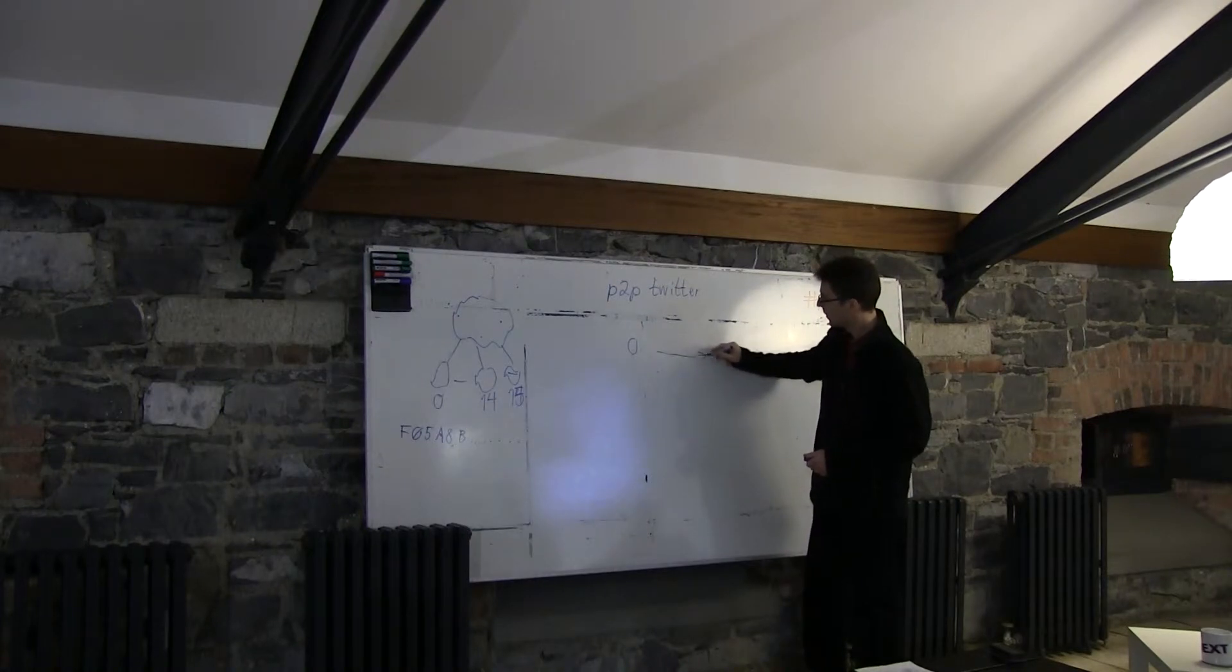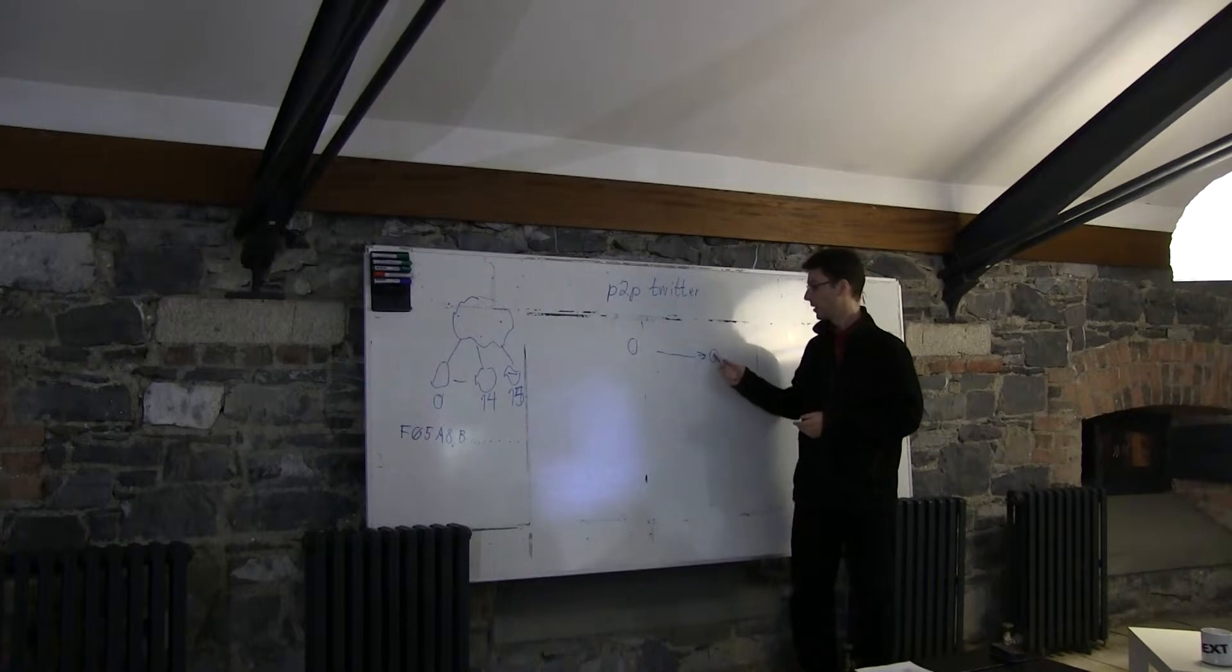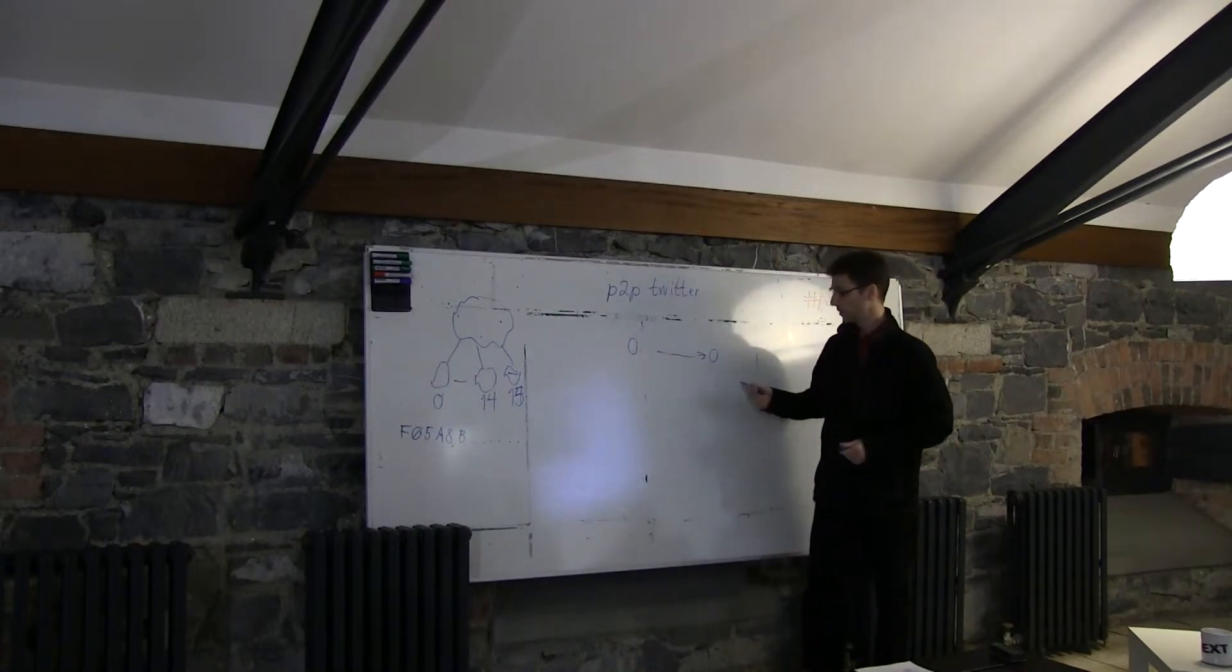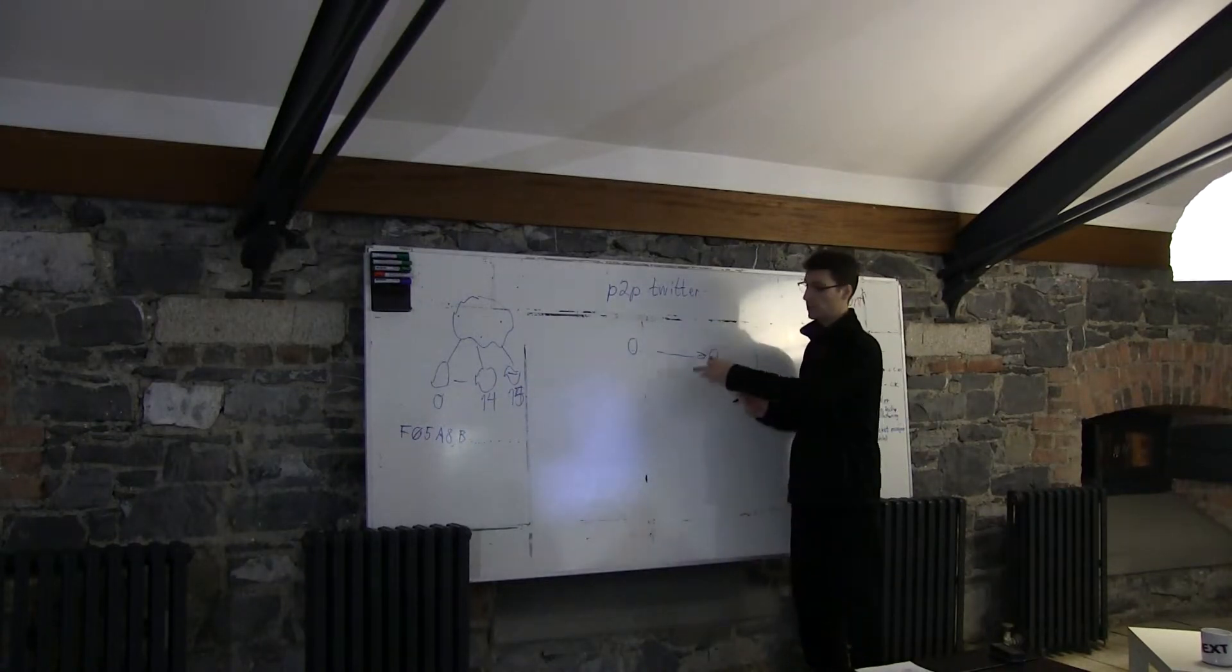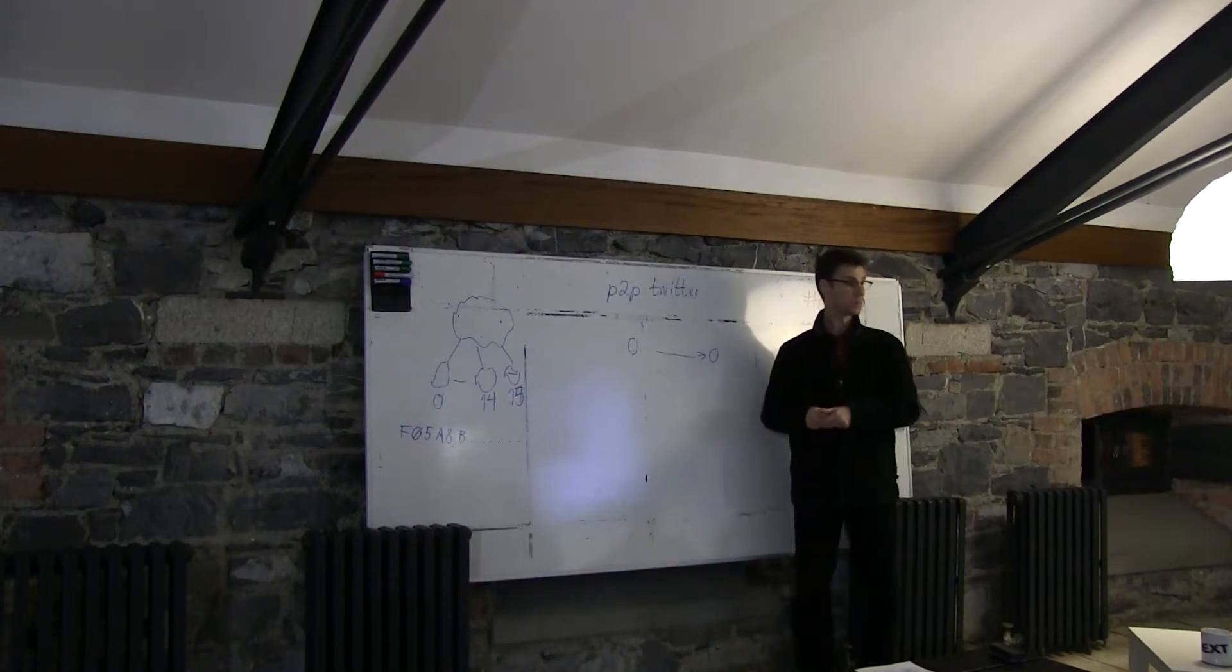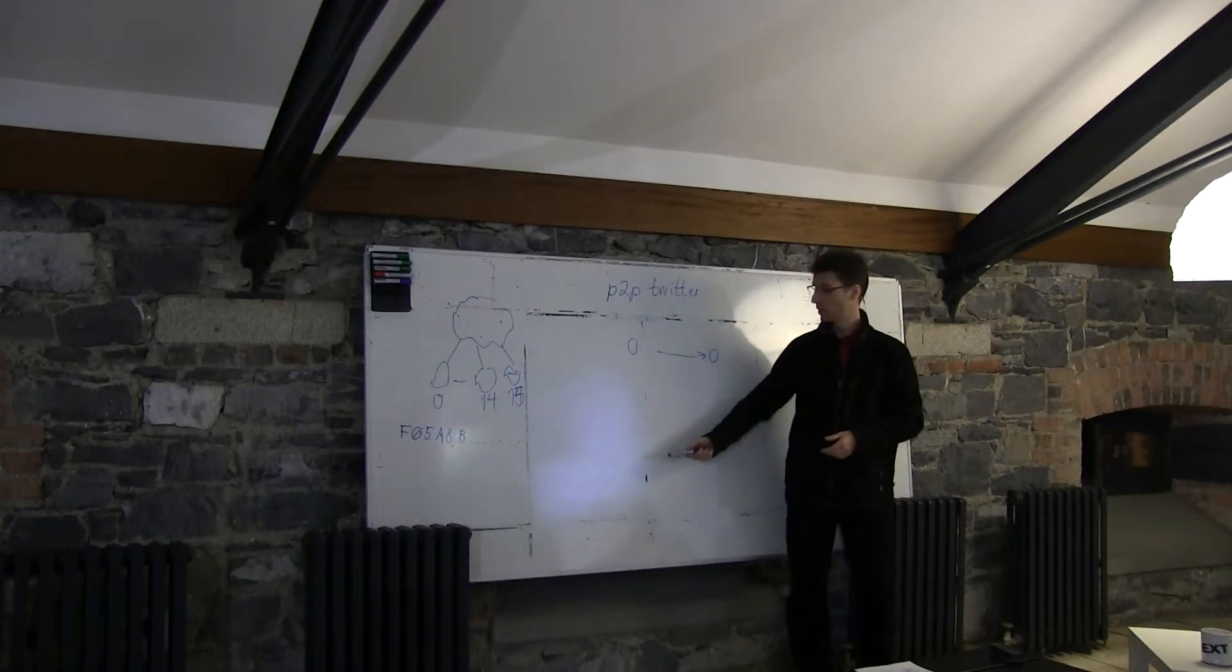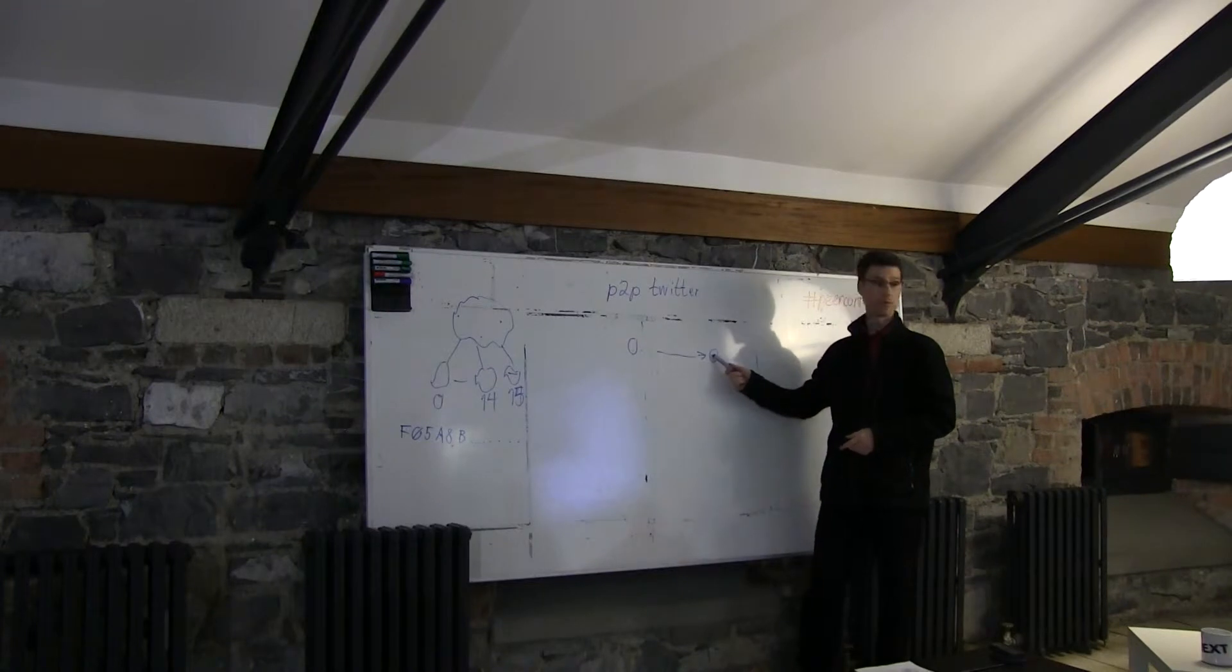So now this node has a copy of the stream, of all the tweets. And they are signed by the originator, of course. Then anyone else that also wants to follow these tweets can download it from... well, this one will also publish on the distributed hashtag that I now have these tweets. And that means that anyone else that wants to get those tweets can get them from originator, if he's still online, or from one of his followers.